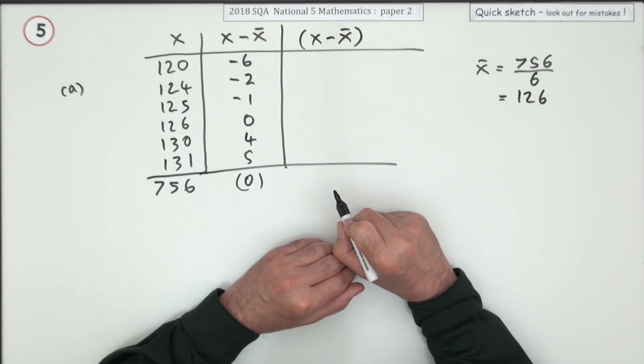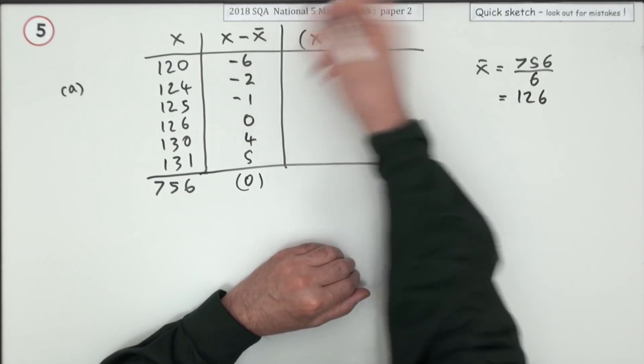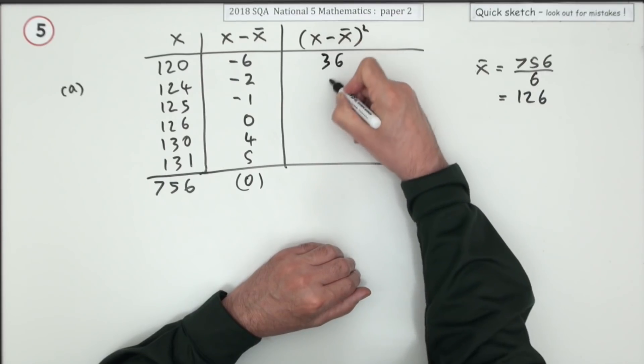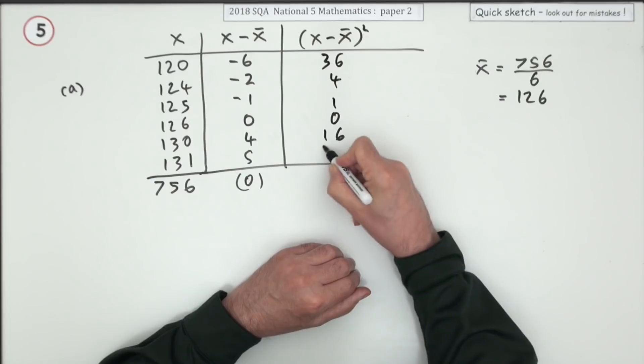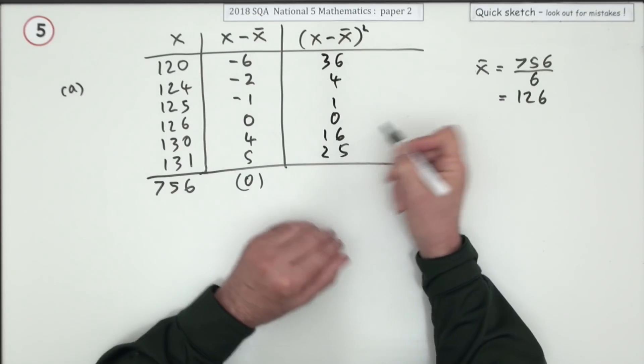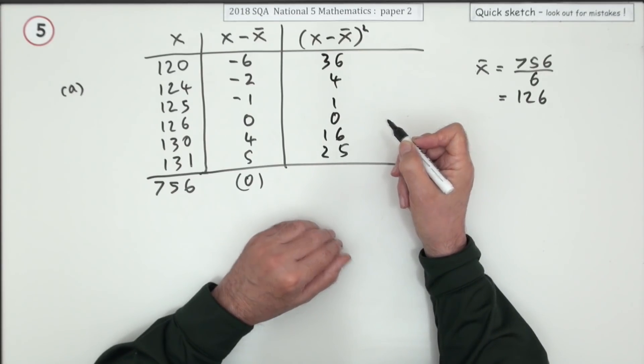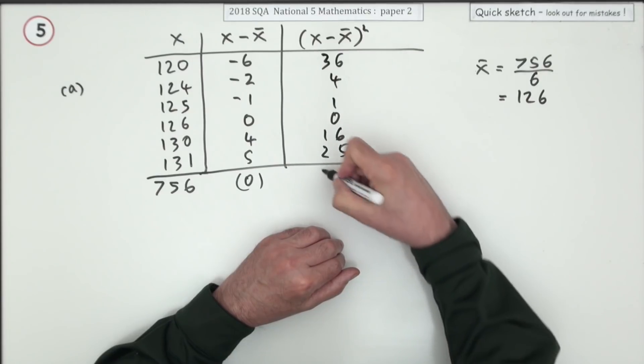Now that part of the formula for the standard deviation - you want the square of these then. So that's 36, 4, 1, 0, 16, 25. You could use your calculator; they're not that bad. 10, 22, 82.